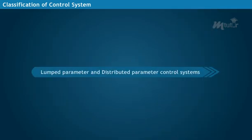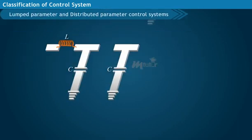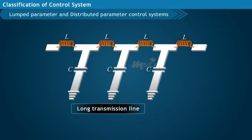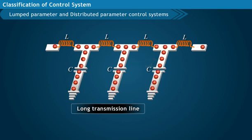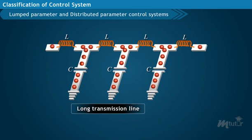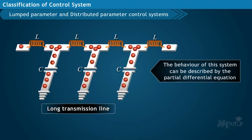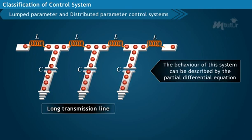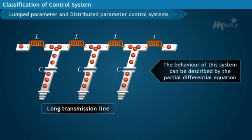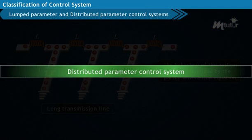Lumped parameter and distributed parameter control systems. In a long electric transmission line, the voltage across and the current through various points of the conductor varies as it has distributed inductance and capacitance. Hence, the behavior of this system can be described by the partial differential equation. These kinds of systems are called distributed parameter control systems.